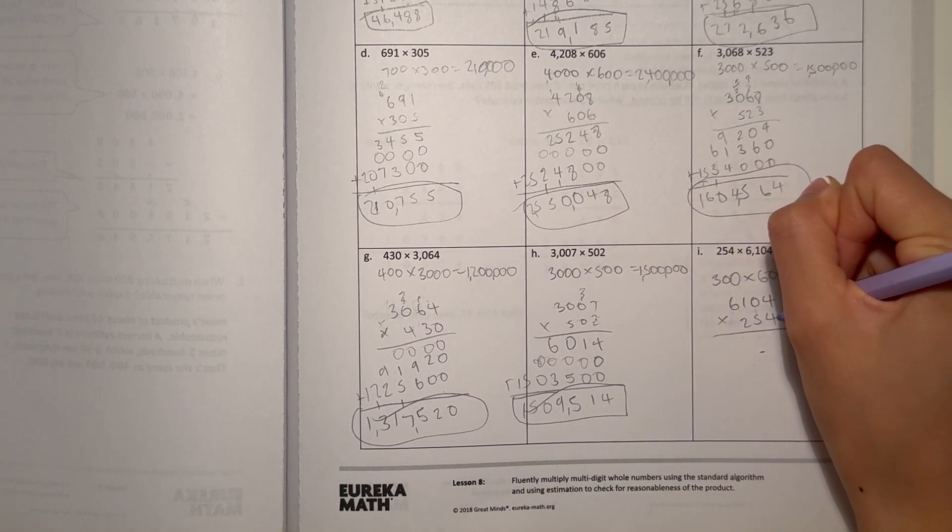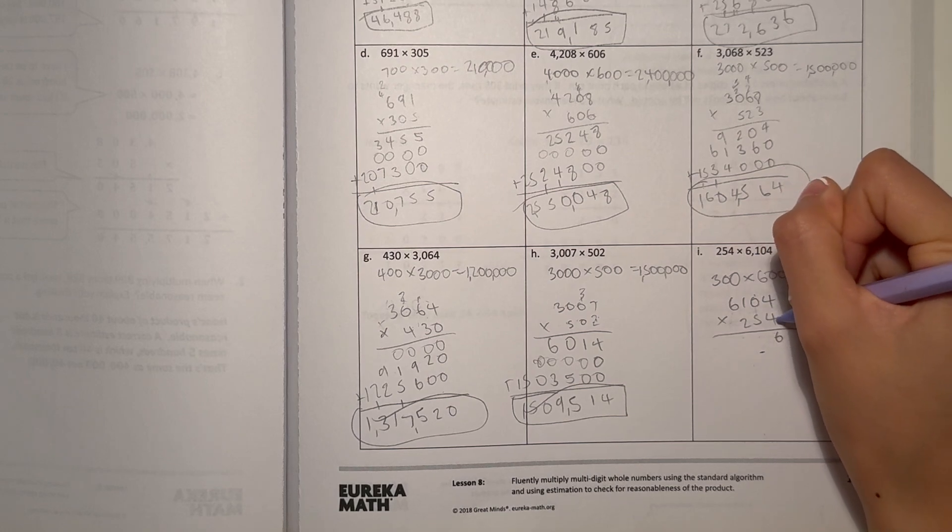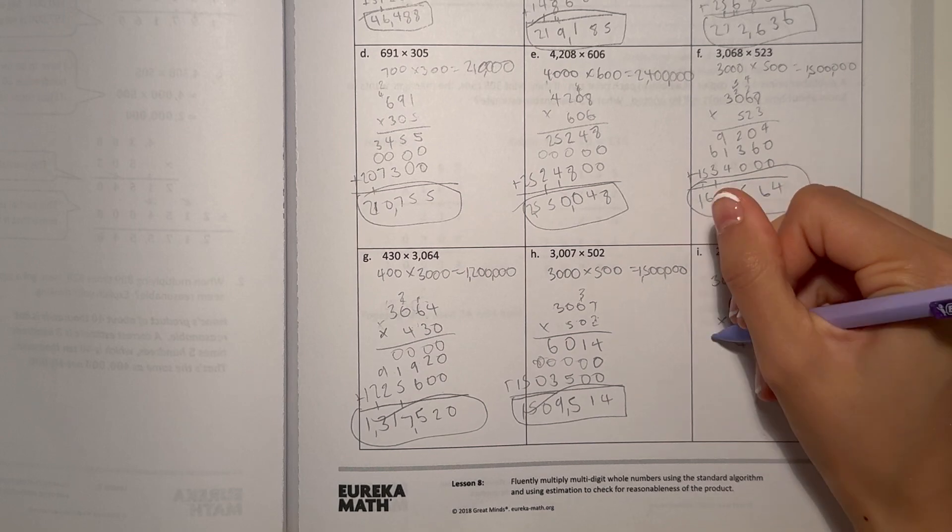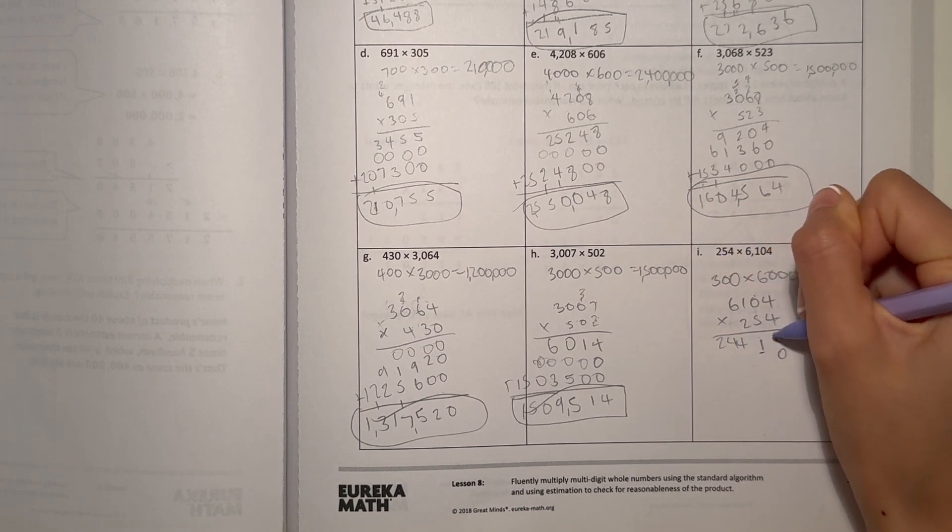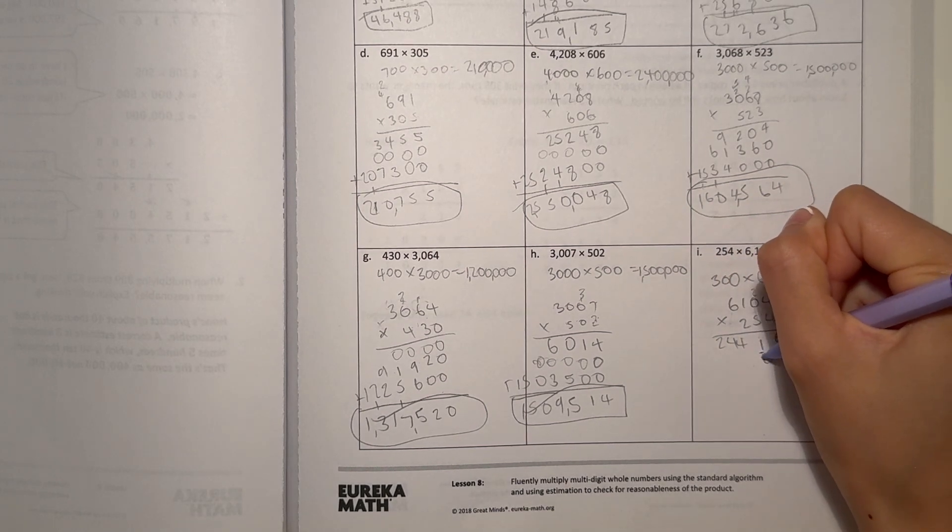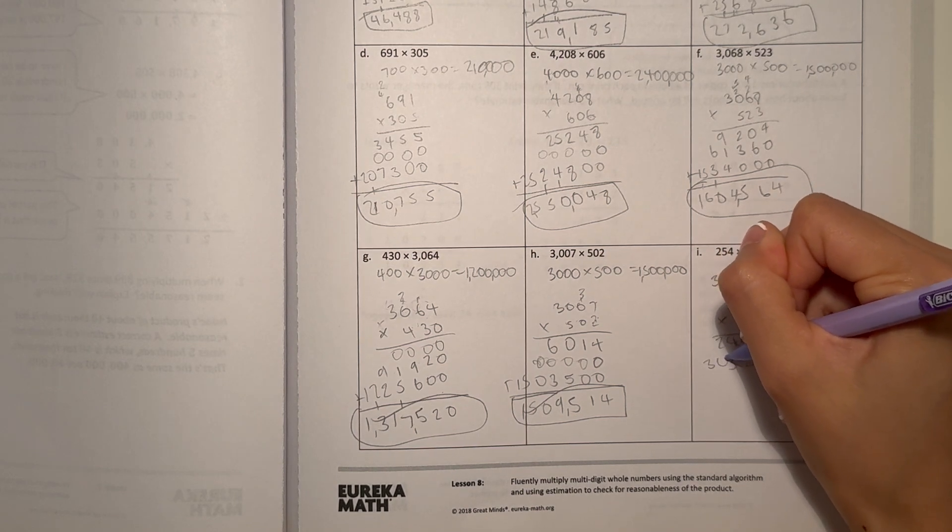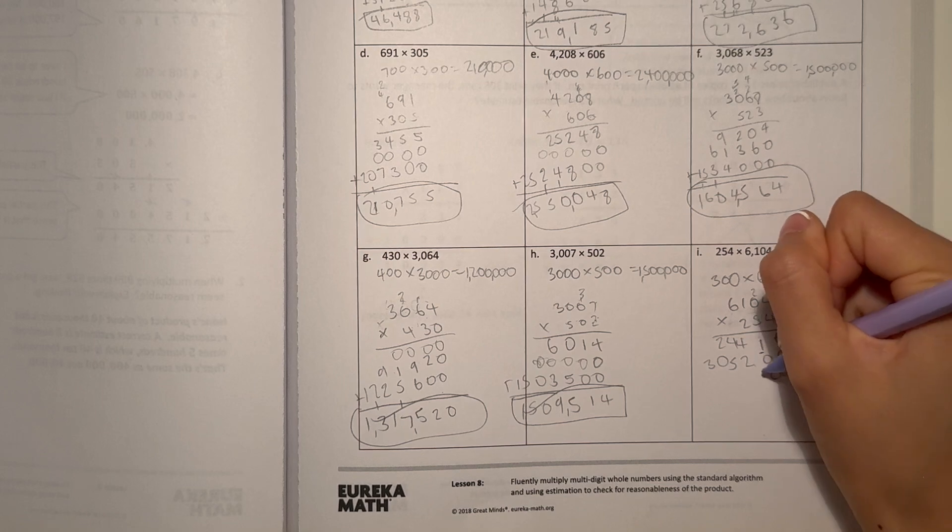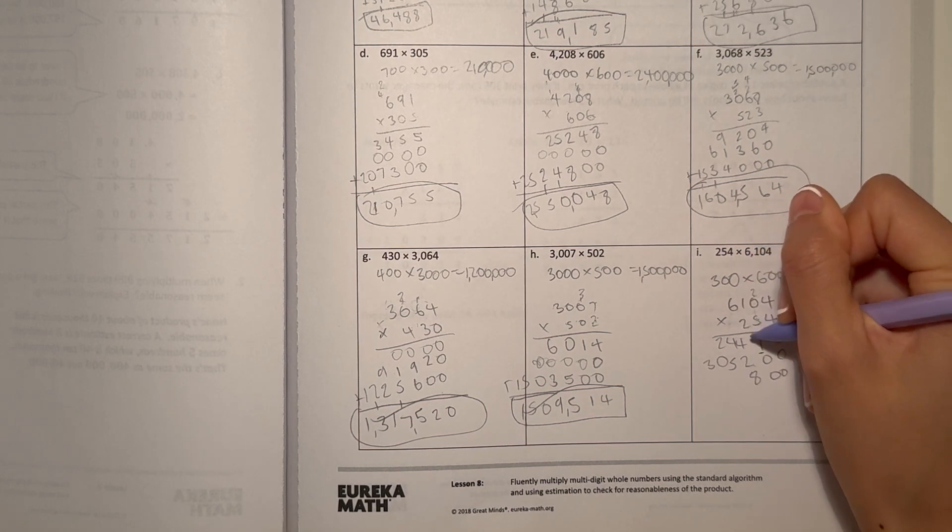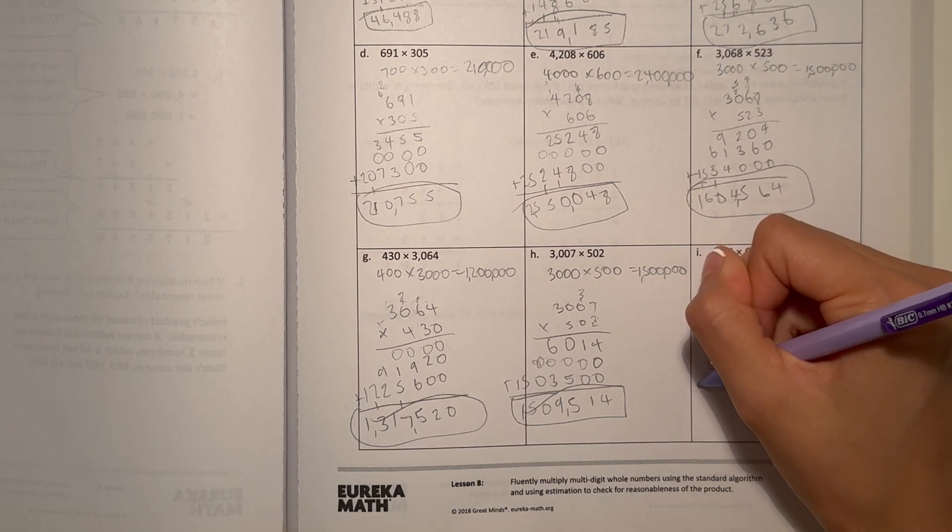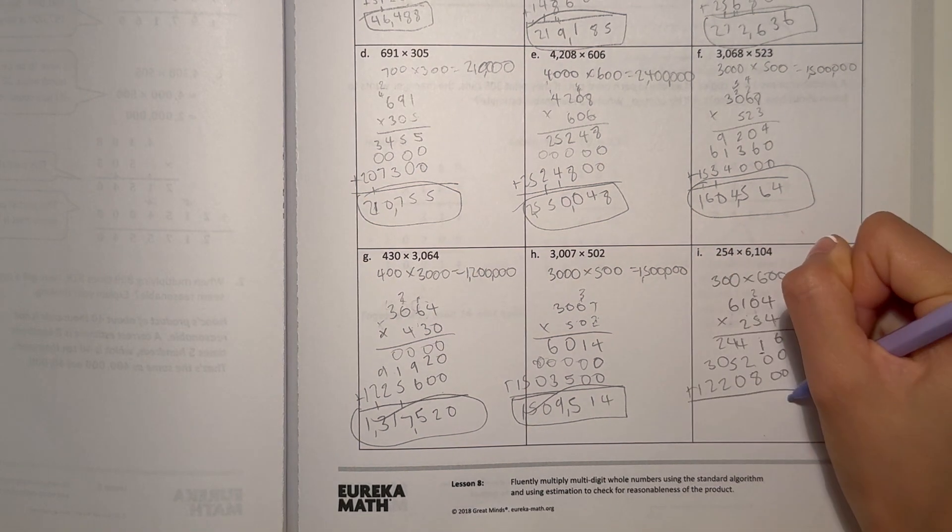Let's look at the 4 first. 4 times 4 is 16. 0 times 4 is 0, plus 1 is 1. 1 times 4 is 4, and 6 times 4 is 24. Add a 0. 0, 0, 2 times 4 is 8. 2 times 0 is 0, 2 times 1 is 2, and 2 times 6 is 12.